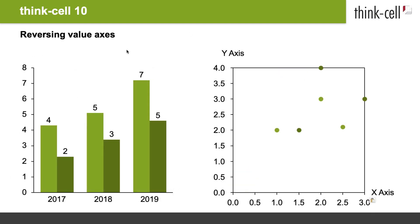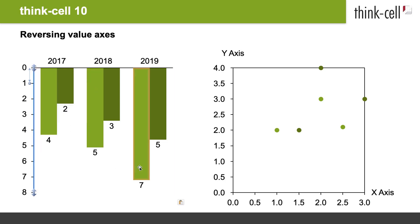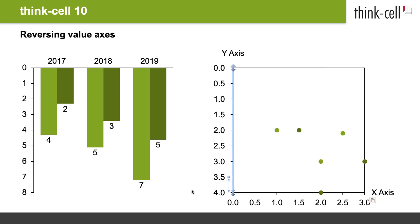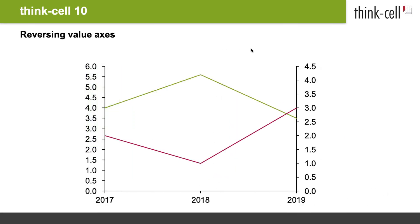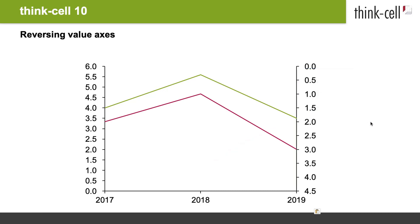Next, I will quickly show you some more new useful features. In ThinkCell 10, you can reverse value axes. In case of stacked, clustered, and area charts, this will simply flip the chart. In case of scatter and bubble charts, it will actually reverse the axis direction. If your line or combination chart features two value axes, you can reverse one of them to highlight negative correlations between data series.